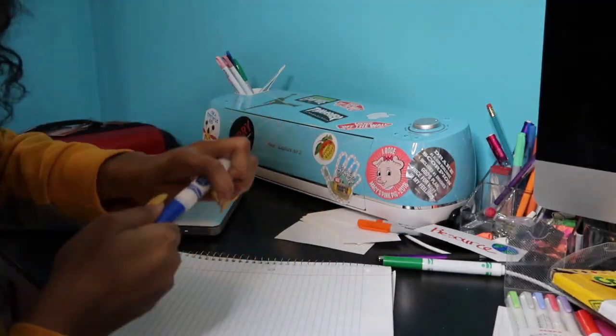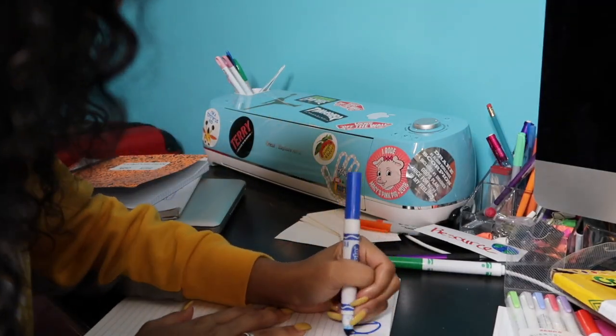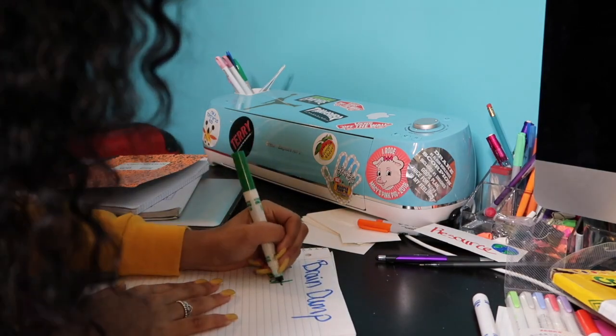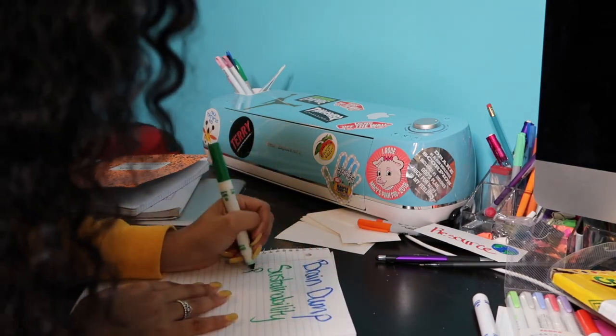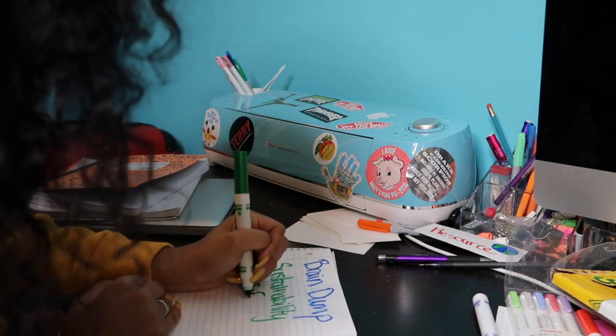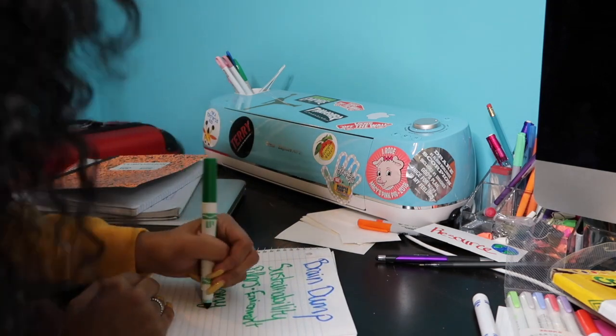Before your test, you can do a brain dump. What this means is just get a piece of paper out and write down everything you remember about your subject. This will allow you to fill in any last-minute blanks and make sure that you know everything you're supposed to know.